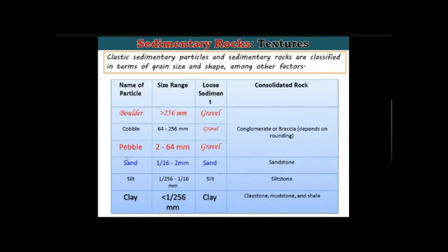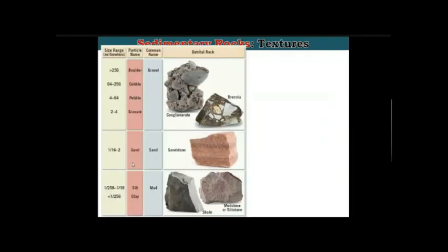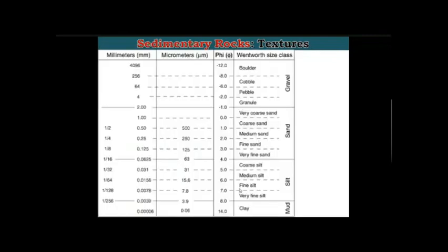Sand is further classified as very coarse, coarse, medium, fine, and very fine. Clay particles have a diameter less than 1/256 mm. Boulders and gravel form conglomerate; sand forms sandstone; mud, shale, or clay forms shale and mudstone.